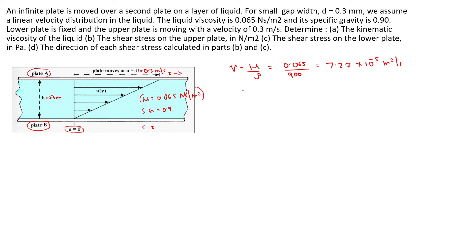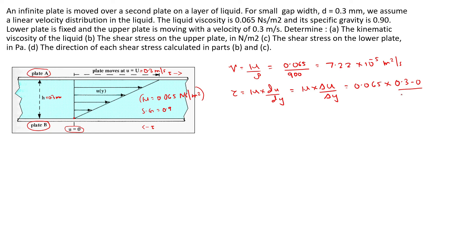To find the shear stress on the upper plate, according to Newton's law of viscosity, tau equals mu into du by dy. Since it has a linear velocity profile, you can write mu into delta u by delta y. Mu is 0.065, and delta u is the difference in velocity between the lower plate and upper plate: the lower plate velocity is 0 and the upper plate moves at 0.3 meter per second, so that is 0.3 minus 0, divided by the film thickness of 0.3 millimeter, that is 0.3 into 10 raised to minus 3. This gives 65 Newton per meter square.